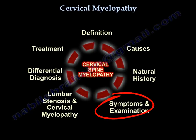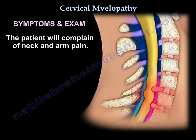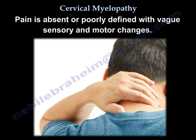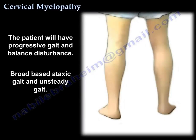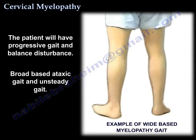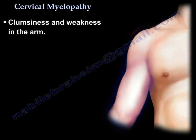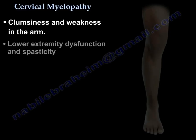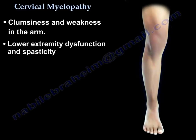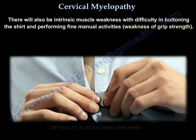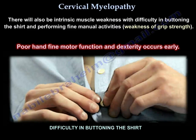Symptoms and exam: the patient will complain of neck and arm pain. Pain is absent or poorly defined with vague sensory and motor changes. There is progressive gait and balance disturbance with a broad-based ataxic and unsteady gait. Clumsiness and weakness in the arm, lower extremity dysfunction and spasticity, and intrinsic muscle weakness — difficulty buttoning a shirt and with fine manual activities. Weakness of grip strength and poor fine motor function and dexterity occurs early.